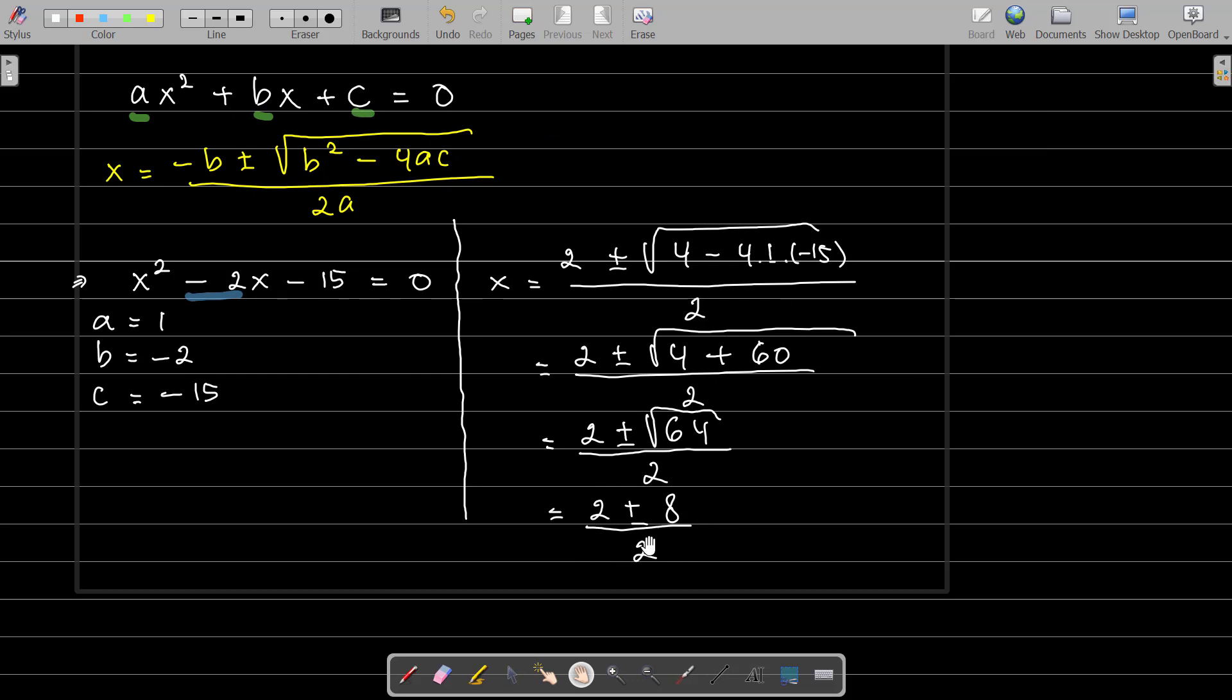So we can say the first answer is x₁ = (2 + 8) / 2. So 2 + 8 is 10, 10 divided by 2 is 5.